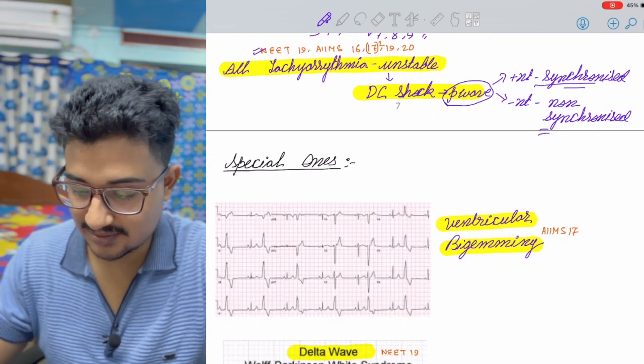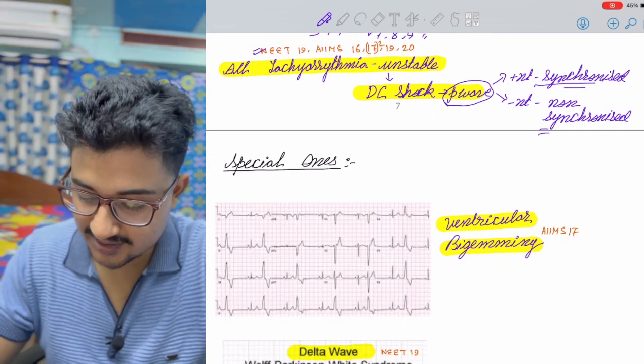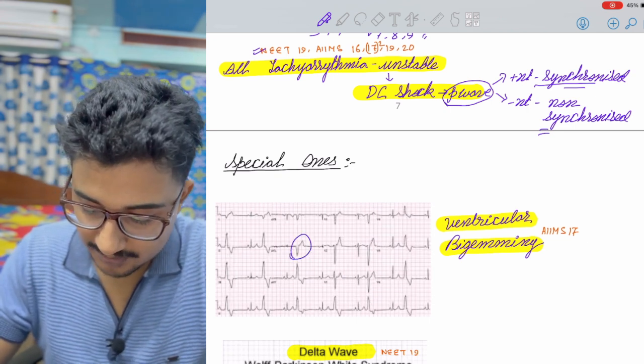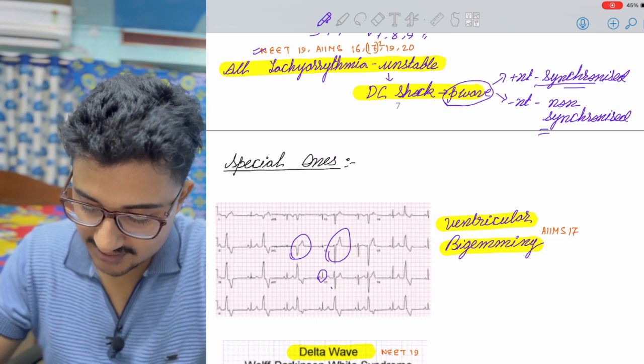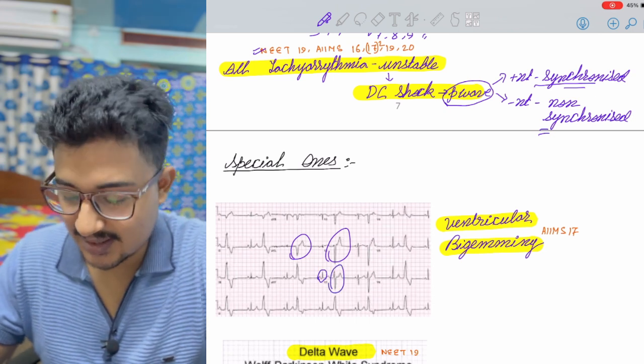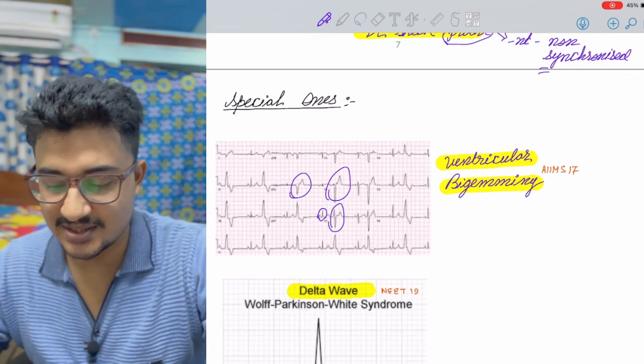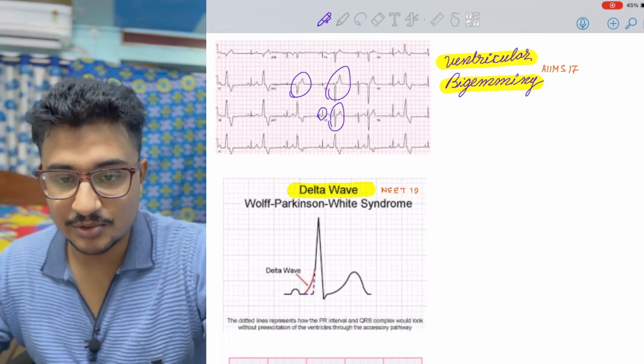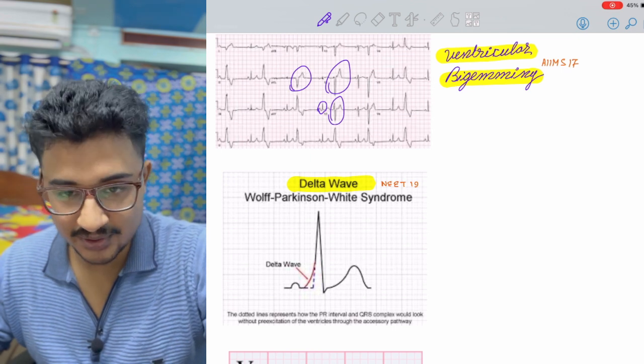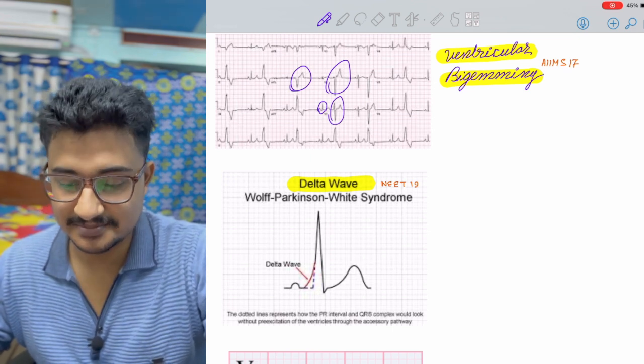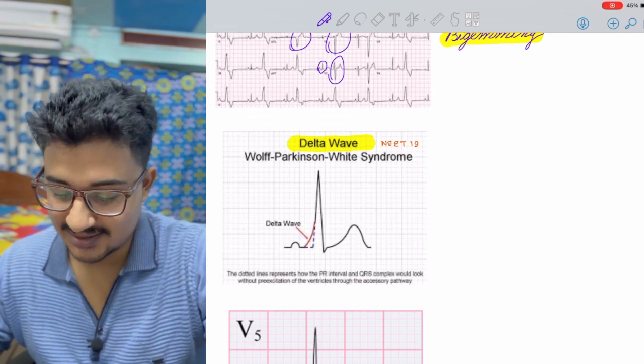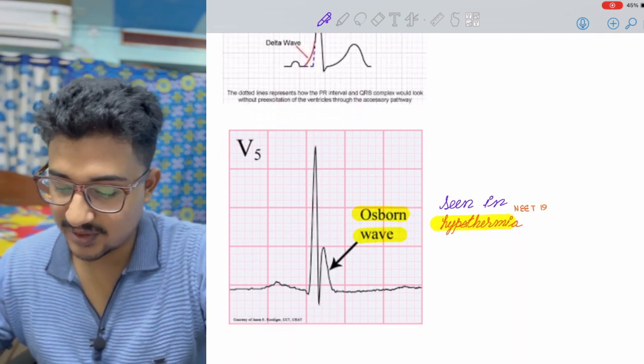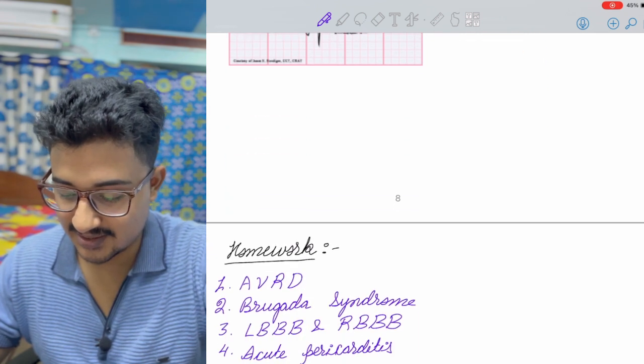Coming to one or two special patterns, here you can see ventricular bigeminy that is more than two morphologies of QRS complex like this and this, these two morphologies. It is seen in cases of digitalis poisoning. And then is the delta wave that you see in WPW syndrome. You all know the concept, if you don't, go study your ECG classes. And Osborne wave is seen in hypothermia, it was also asked in NEET.